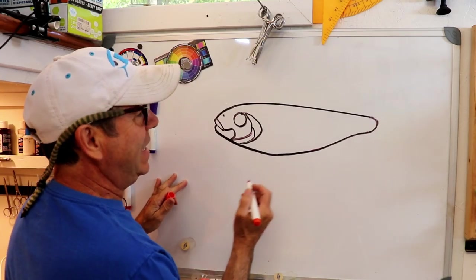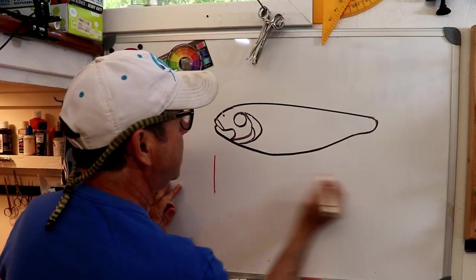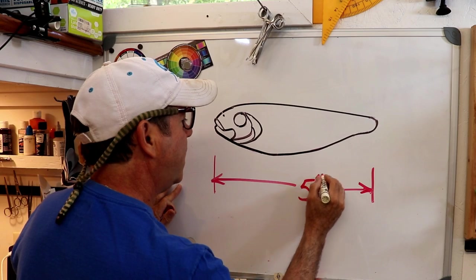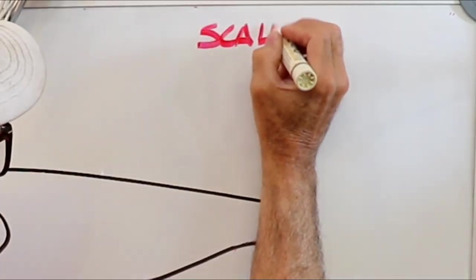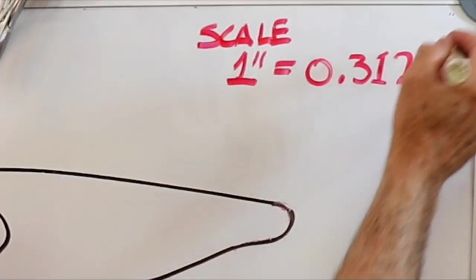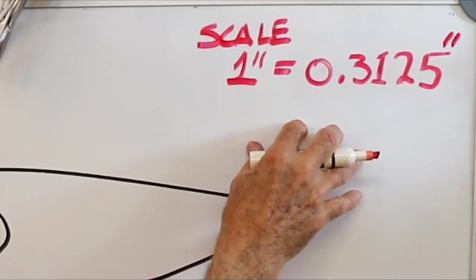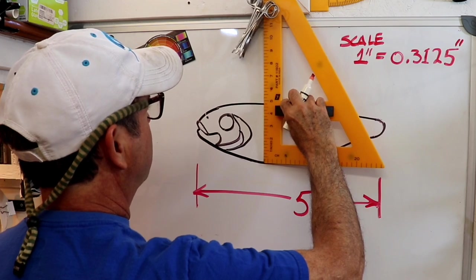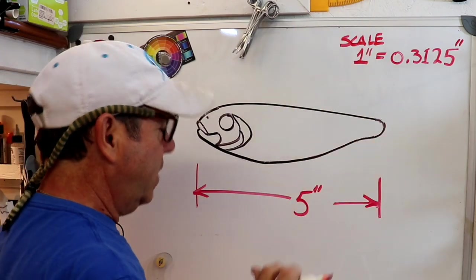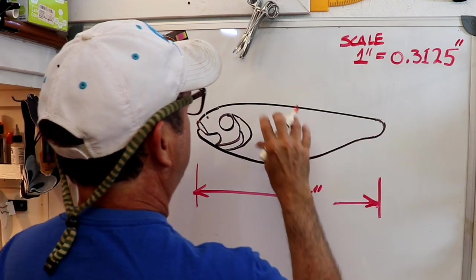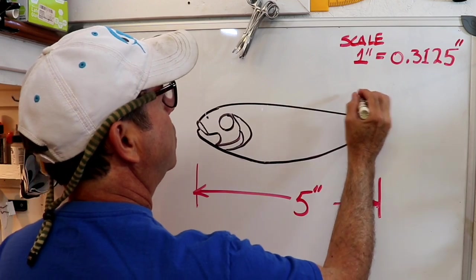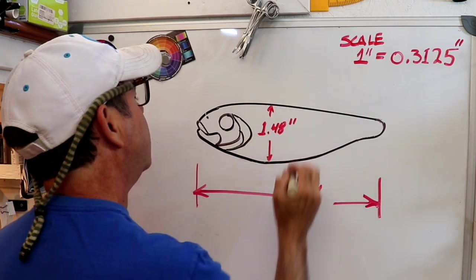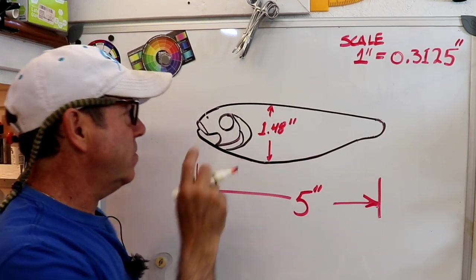Let's talk about the actual size. I want the lure to be 5 inches long. Just to save time, I've done this math already. Four and three quarters here is actually equal to 1.48 inches, and we'll just call that one and a half.